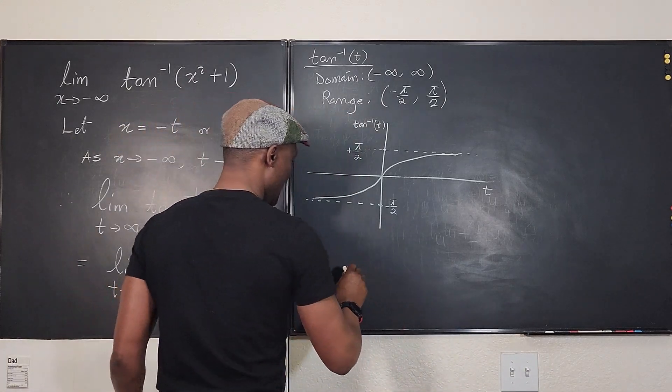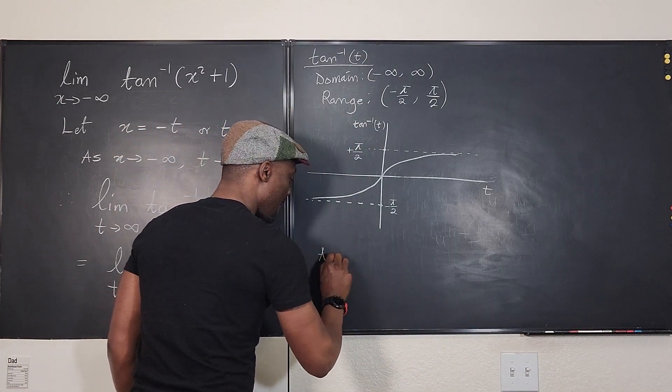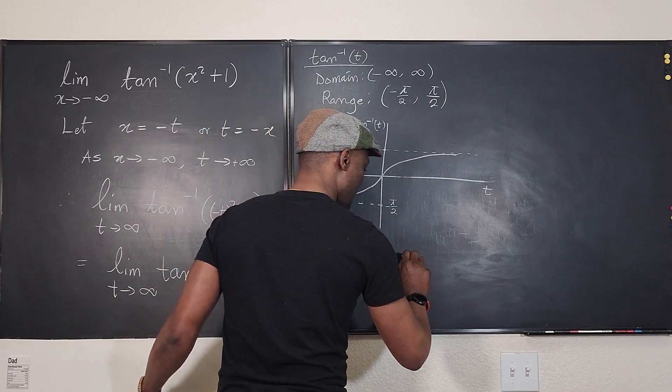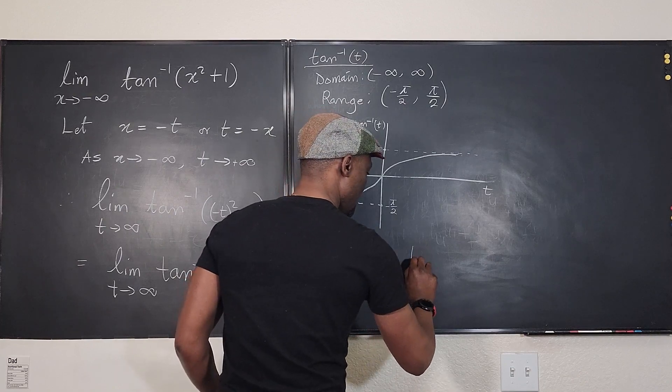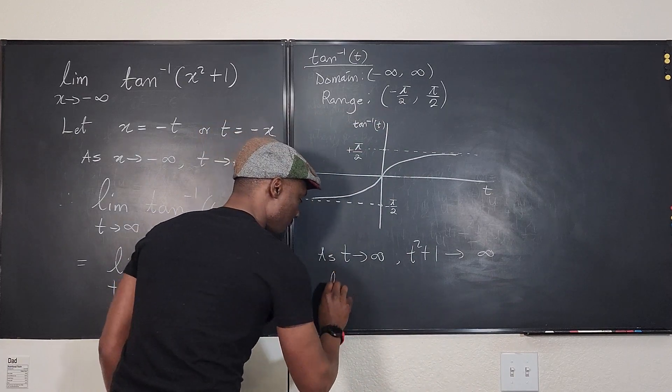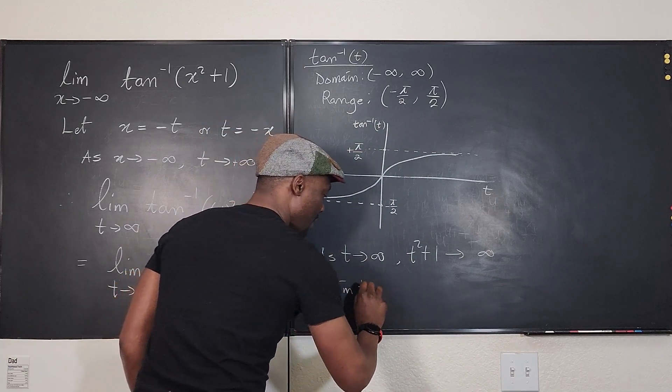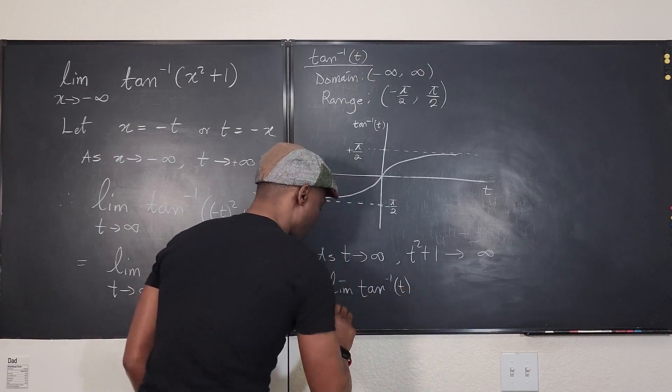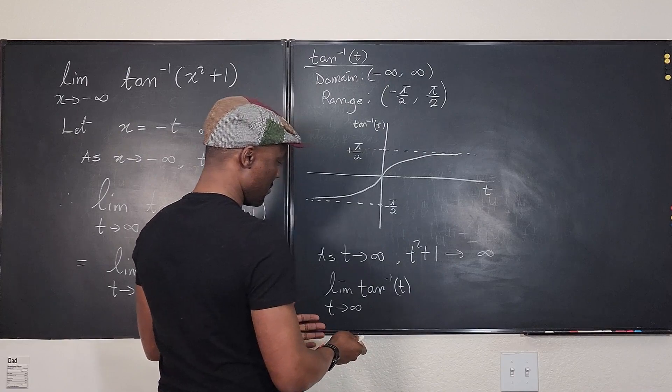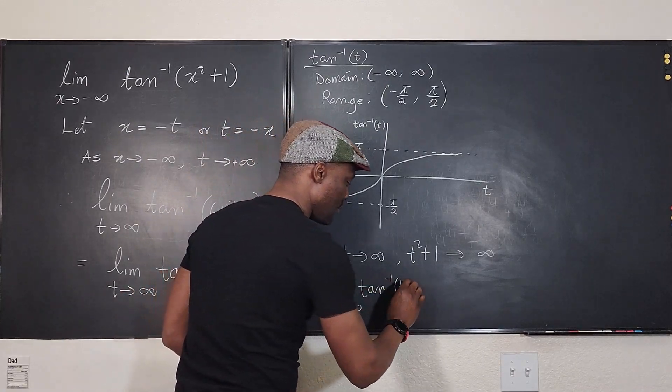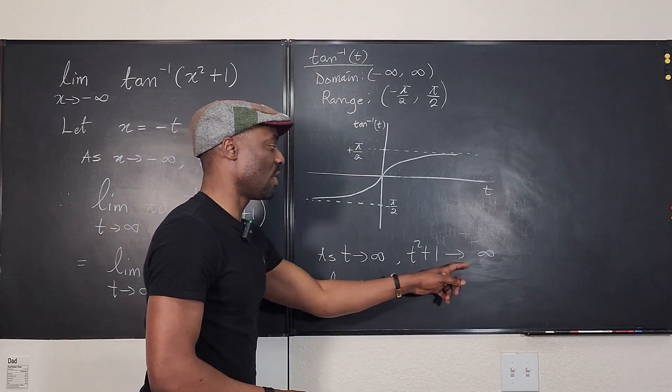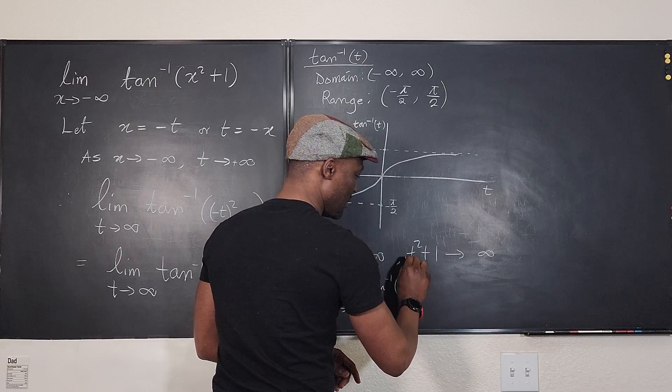So here we can come here and say that as t goes to infinity, we have t squared plus one goes to infinity. And the limit of arctan of t as t goes to infinity, well we'll say t, let's just call it t squared. But t squared plus one goes to infinity.